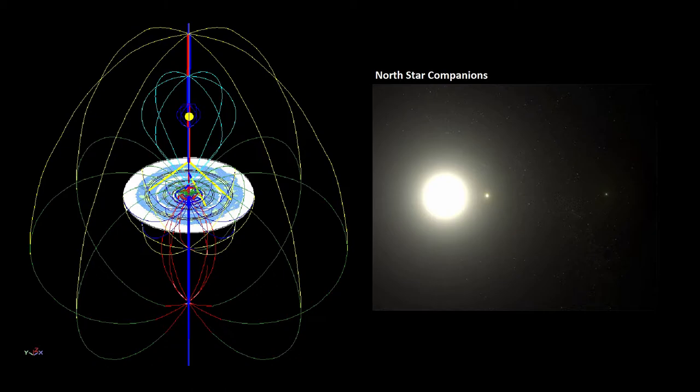but the other hugs Polaris so tightly that it has never been directly observed until now. Using the Hubble Space Telescope, astronomers have photographed this close neighbor for the first time, recording its ultraviolet light. The star we observed is so close to Polaris that we needed every available bit of Hubble's resolution to see it, said Nancy Evans, an astronomer at the Harvard-Smithsonian Center for Astrophysics who participated in the research.